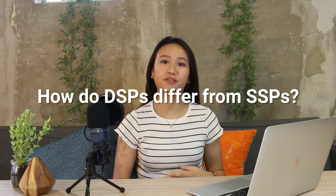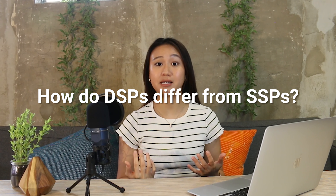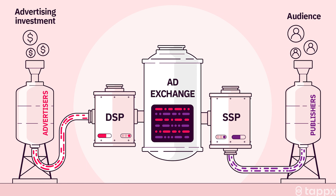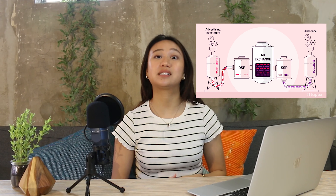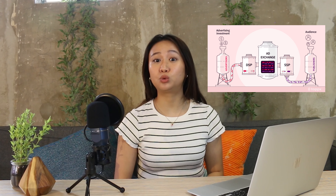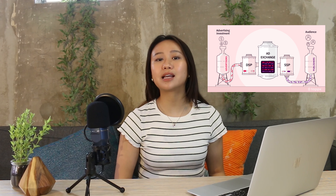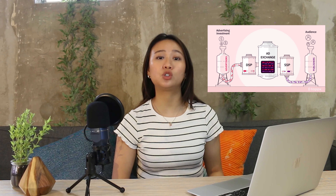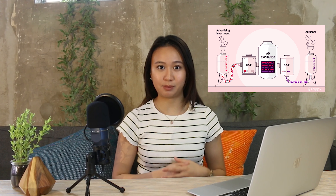How do DSPs differ from SSPs? Simply put, a DSP and an SSP connect to different parts of the programmatic ecosystem. A demand-side platform is a tool used by advertisers to organize ad buying, whereas a supply-side platform is used by publishers to automate the sale of advertising space.